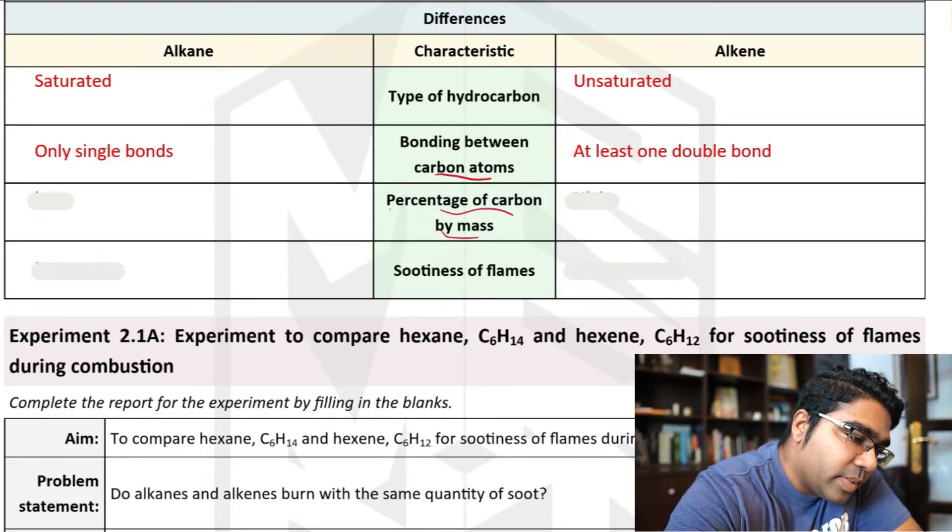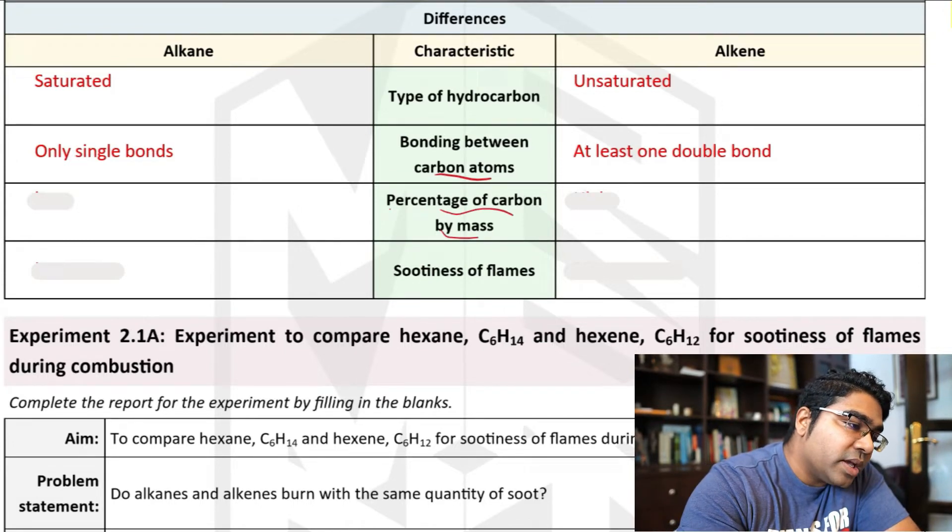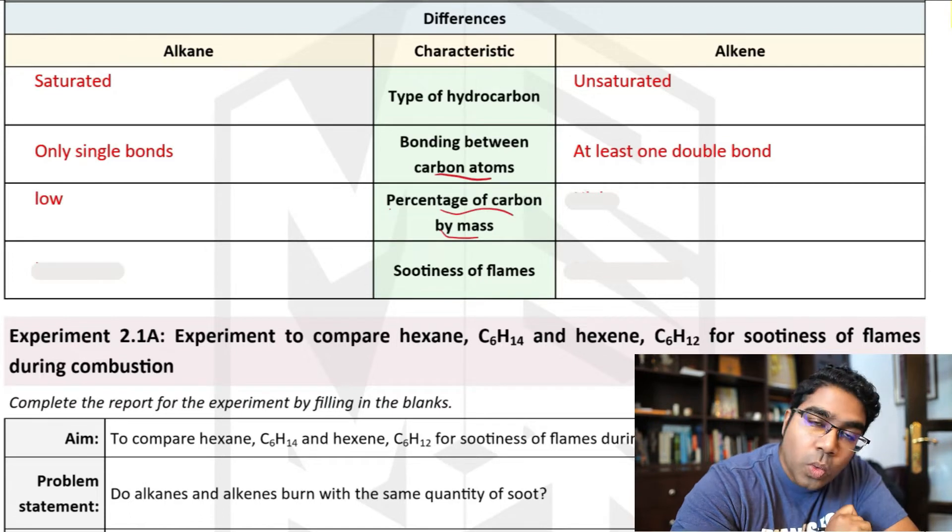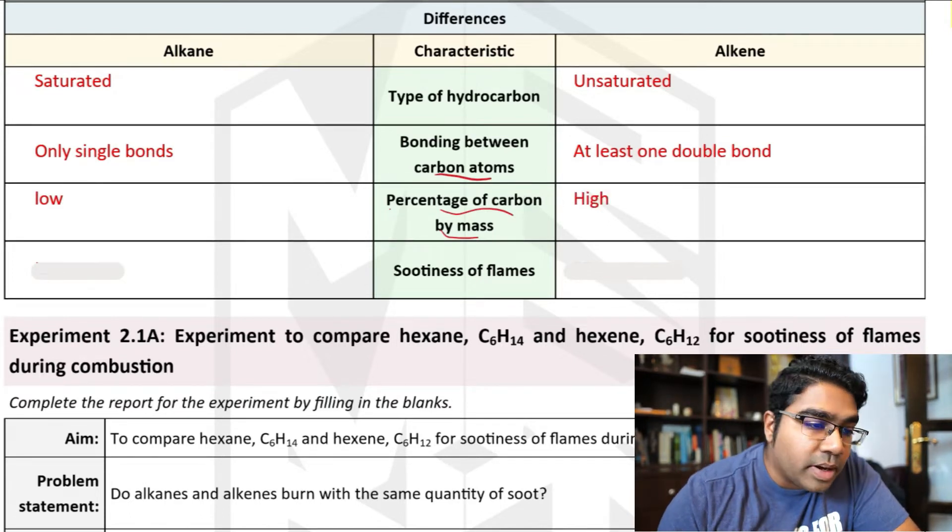And the percentage carbon by mass, we will go through the calculation in a while. The percentage carbon by mass of alkane is actually relatively lower than alkenes. Alkenes have a higher percentage carbon by mass.